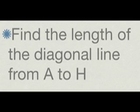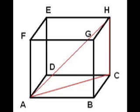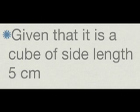The problem we're going to look at is an extension of the Pythagoras theorem problem. In the following diagram, you're required to find the length from point A to point H that runs through the inside of that cube. The side length of the cube is 5 cm.